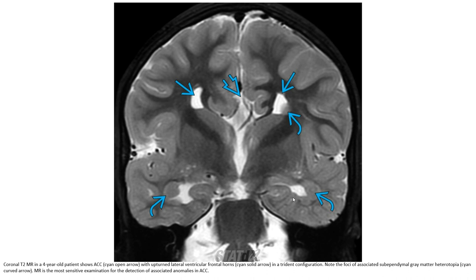This is the coronal T2 sequence in a whole-year-old patient. This is corpus callosum agenesis — cyan open arrowhead indicating the upturned lateral ventricle horns, and cyan solid arrowhead indicating the trident configuration. Note the associated sub-ependymal gray matter heterotopia, indicated by the cyan curved arrow. MRI is the most sensitive examination for detection of associated corpus callosum anomalies.